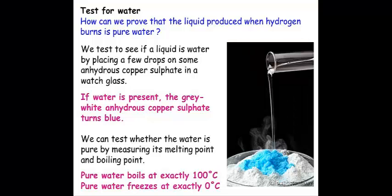We can also test to see whether this water is pure by testing its melting and boiling point. Pure water should boil at exactly 100 degrees Celsius, and pure water should also freeze at exactly 0 degrees Celsius. Using these two methods, we can prove that the product produced from combustion of hydrogen is in fact pure water.